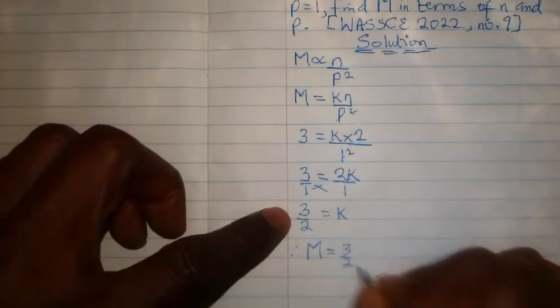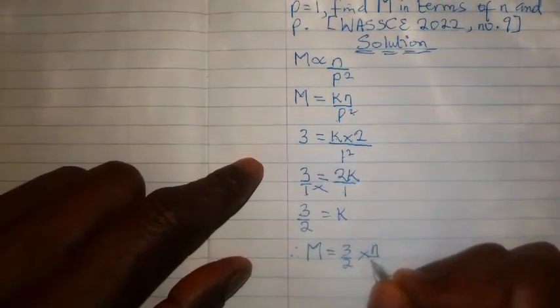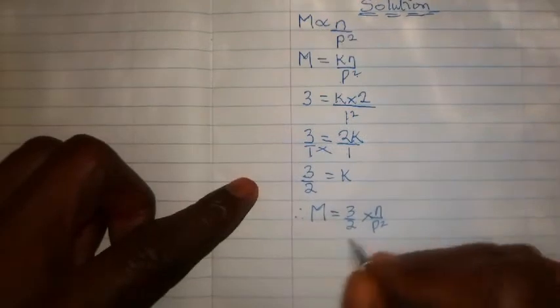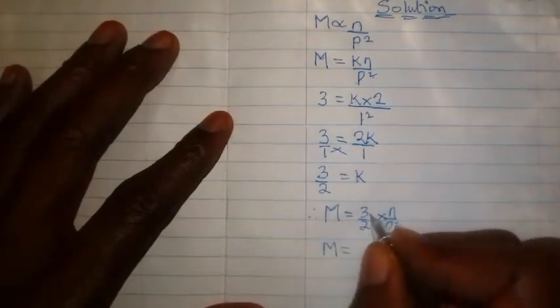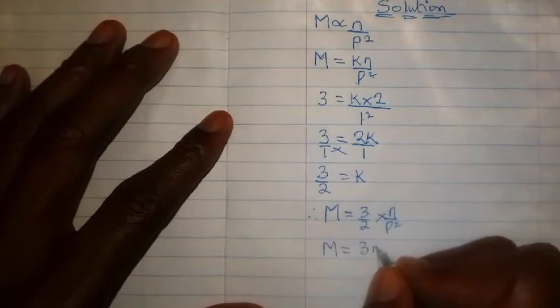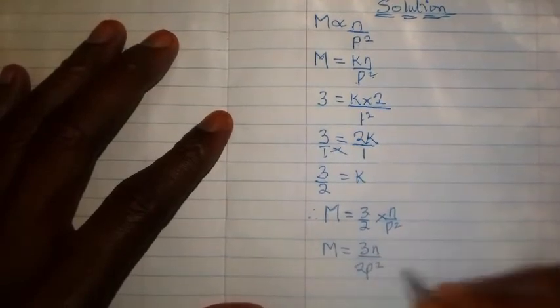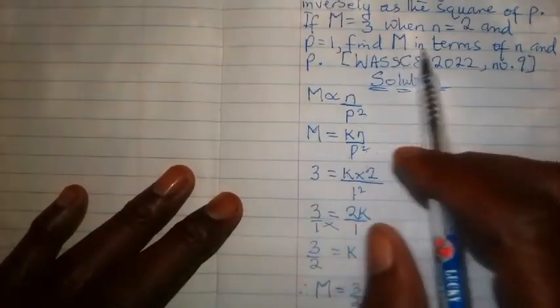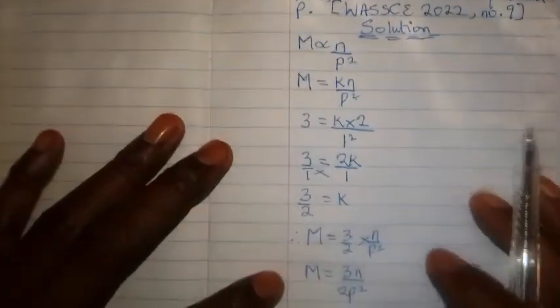3 upon 2, multiply by what? By n upon p squared. So we have n upon p squared. In multiplying this we shall have m equals 3 times n, which is 3n, upon 2 times p squared, which will give us 2p squared. And this is going to be the final answer to this question. And that is what the question says here, that we should find m in terms of n and p. And this